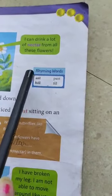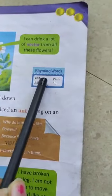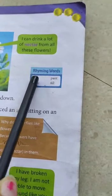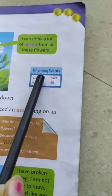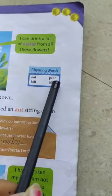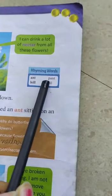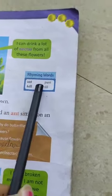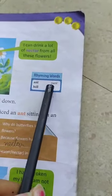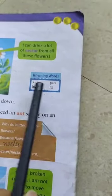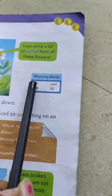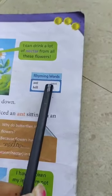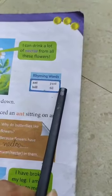First rhyming word: ant — A-N-T, ant. Ant ka rhyming word hai P-A-N-T, pant. Rhyming words yaani ki jo dono words ek jaise hote hain, jinke pronunciation ek jaisa hota hai aur unke peeche ke letters bhi same hote hain. A-N-T, ant — P-A-N-T, pant.